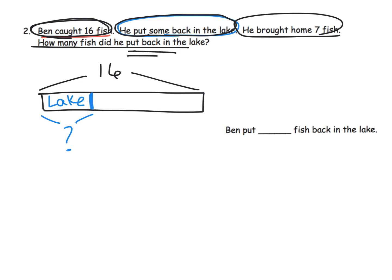He put some of those 16 fish back in the lake but we don't know how many — in fact the question asks exactly that. So there's my question mark taking care of that part. It also says he brought home seven fish, so I'm going to label that right here as the fish he brought home — seven. So you've got 'lake' and 'home,' the total is 16, and the question is how many did he put back in the lake.